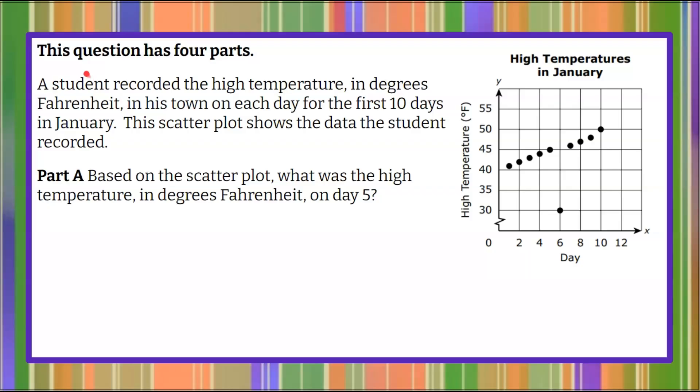Here is our question today. We have a question that has four parts today. We'll do each part independent of the other. A student recorded the high temperature in degrees Fahrenheit in his town on each day for the first 10 days in January. This scatterplot shows the data the student recorded. So here is our scatterplot.